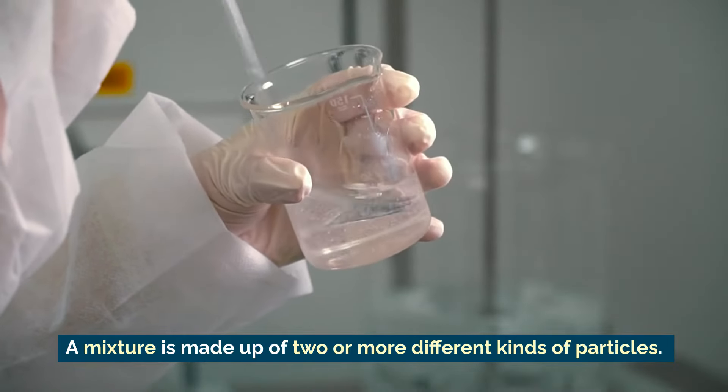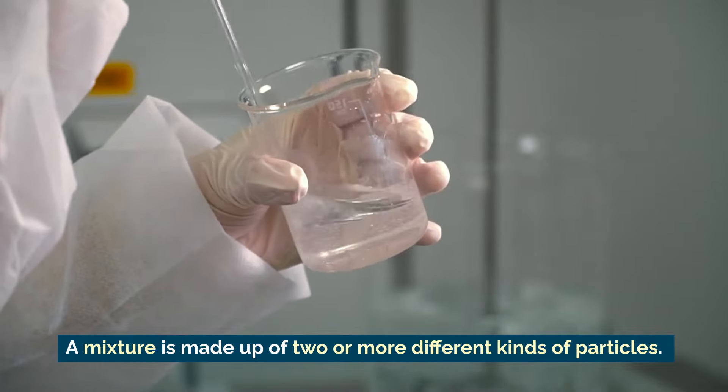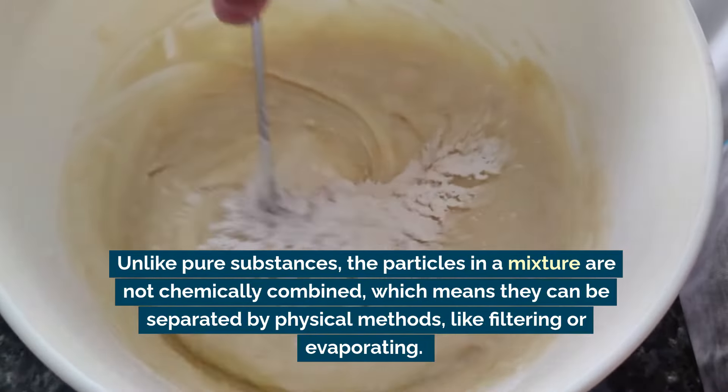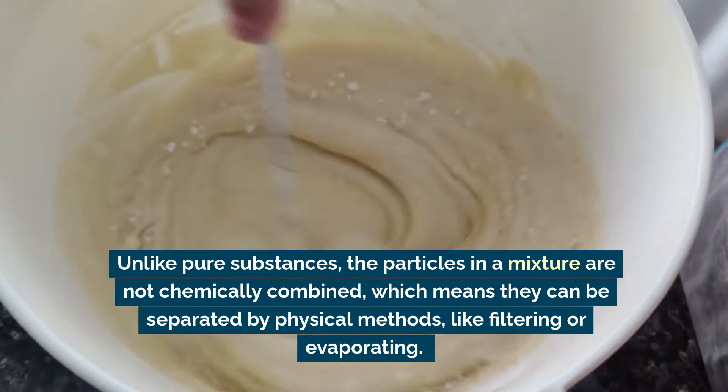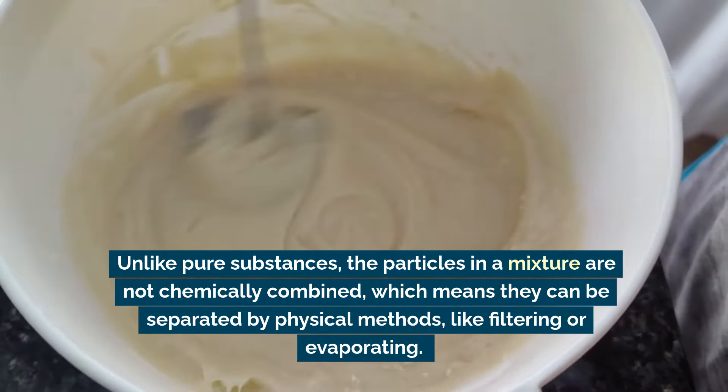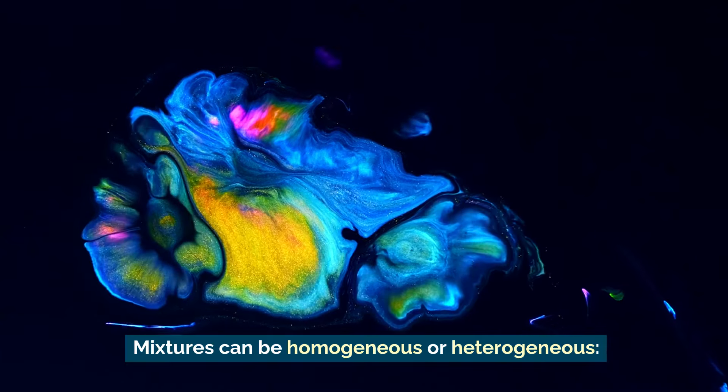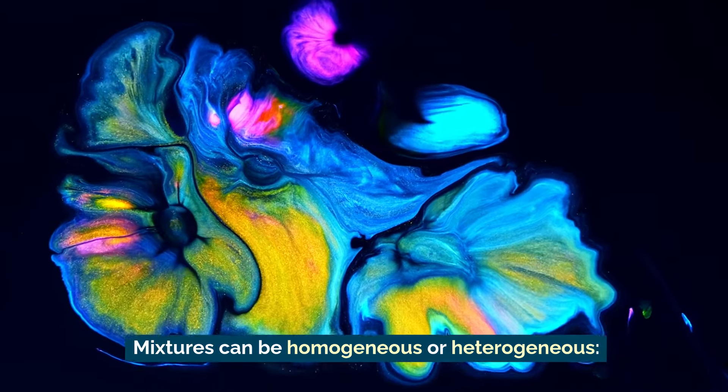A mixture is made up of two or more different kinds of particles. Unlike pure substances, the particles in a mixture are not chemically combined, which means they can be separated by physical methods, like filtering or evaporating. Mixtures can be homogeneous or heterogeneous.